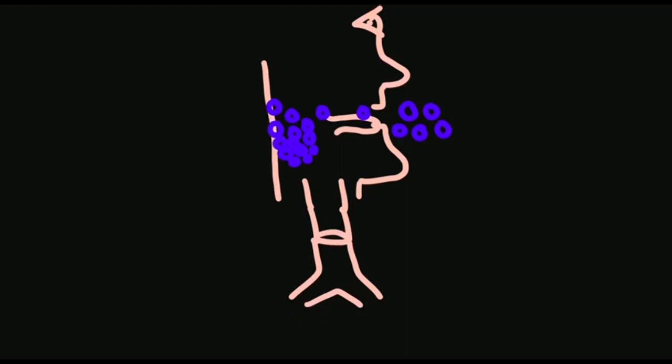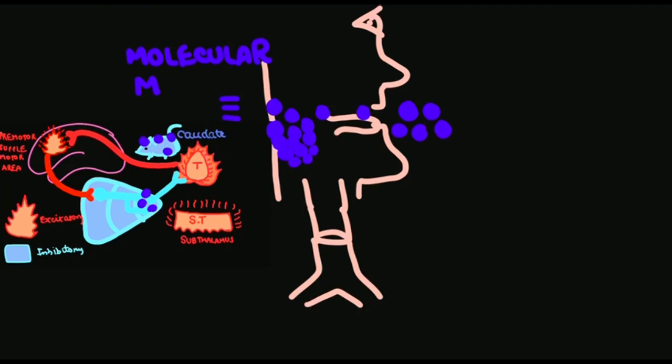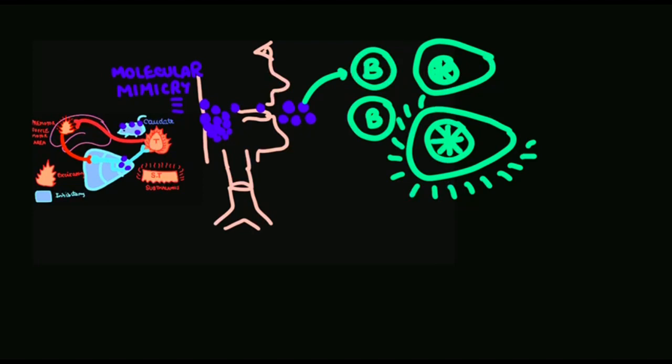In this baby, there was a streptococcal group B infection, and the streptococcal proteins were similar to the proteins present in the caudate nucleus and globus pallidus interna. This is called molecular mimicry. Our immune B cells produce antibodies that attack not only the streptococcal proteins but also our basal ganglia regions.